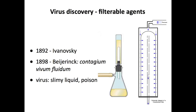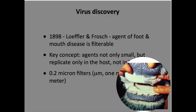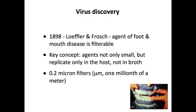Virus is actually Latin, meaning slimy liquid or poison. They didn't have a concept of a particle — just something passing through the filter, something very small, that would not grow unless cells were present. The first animal virus was foot and mouth disease virus in 1898 — again demonstrated by filterable agents. It causes lesions in the mouth and on the feet of cattle, and they found these lesions contained filterable agents that caused the disease. The key concepts: small agents that go through a filter of 0.2 microns in size, and they replicate only in a host — not in a broth like Pasteur's and Koch's bacteria. That's what distinguished these agents from everything else.